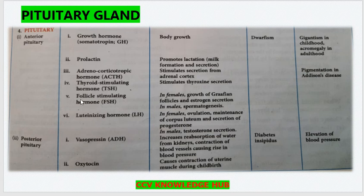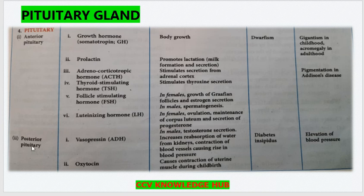The next hormone is Follicle Stimulating Hormone, FSH. In females, it promotes the growth of Graafian follicles and estrogen secretion, whereas in males it promotes spermatogenesis. The other hormone is Luteinizing Hormone. In females, ovulation and maintenance of corpus luteum is its main function, as well as secretion of progesterone. Under the posterior pituitary, two hormones are released: vasopressin and oxytocin.